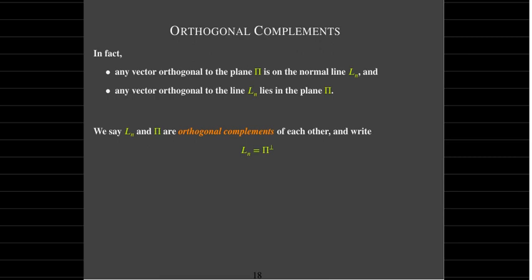We say they're orthogonal complements of each other because the line by itself doesn't span R3, and the plane pi by itself doesn't span R3, but their union — or their join — is going to be all of R3. The way we write orthogonal complements is to use a little perpendicular sign as a superscript. We say Ln equals pi-perp, or pi is Ln-perp. I would say the normal line is the orthogonal complement of pi.